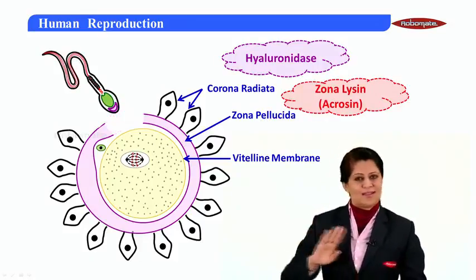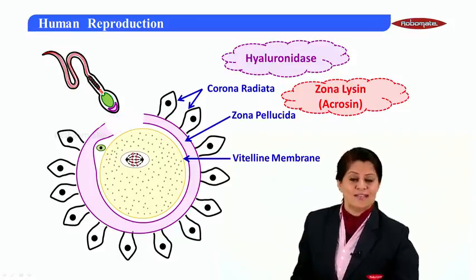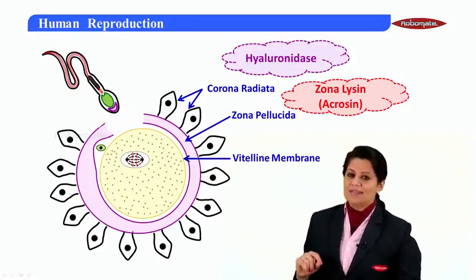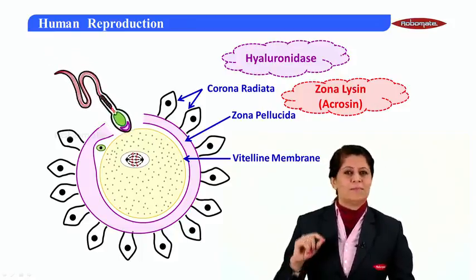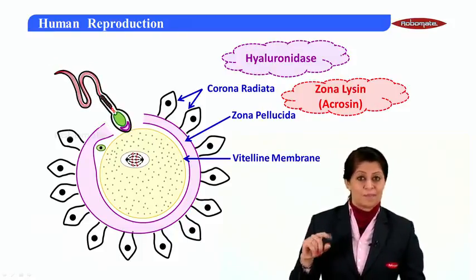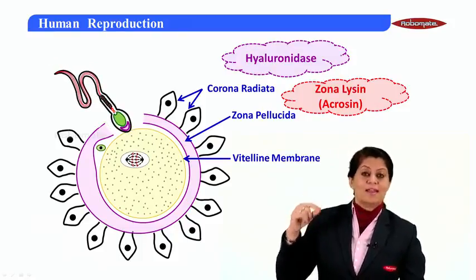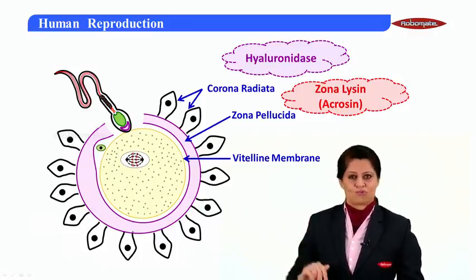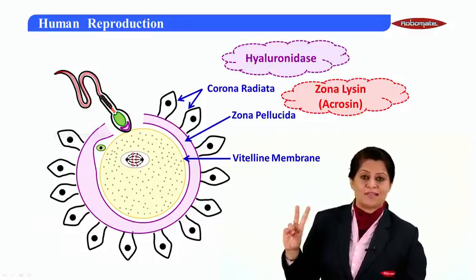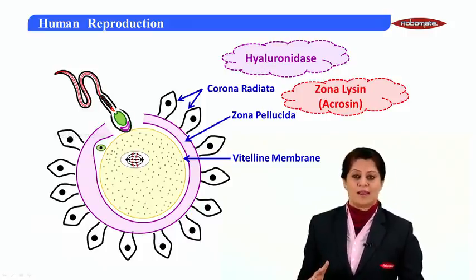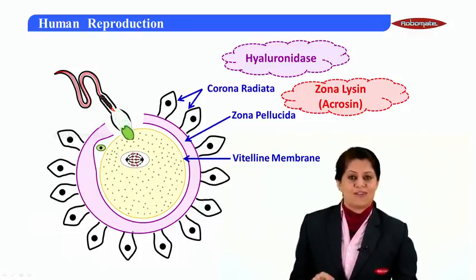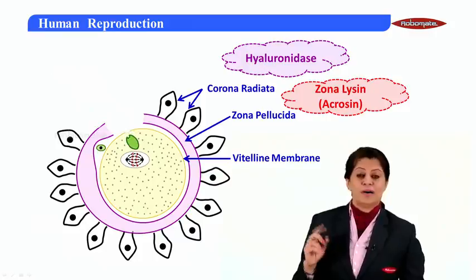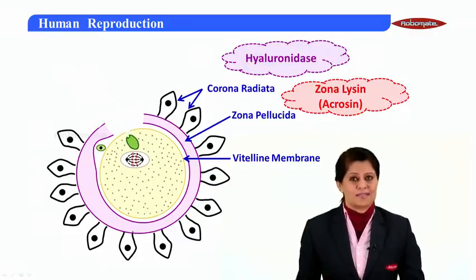So two barriers are crossed. Now the third is the vitelline membrane. Once the sperm head's acrosome membrane touches the vitelline membrane, they fuse together. The acrosome membrane and vitelline membrane fuse together, and that releases the nucleus of the sperm inside the ooplasm.